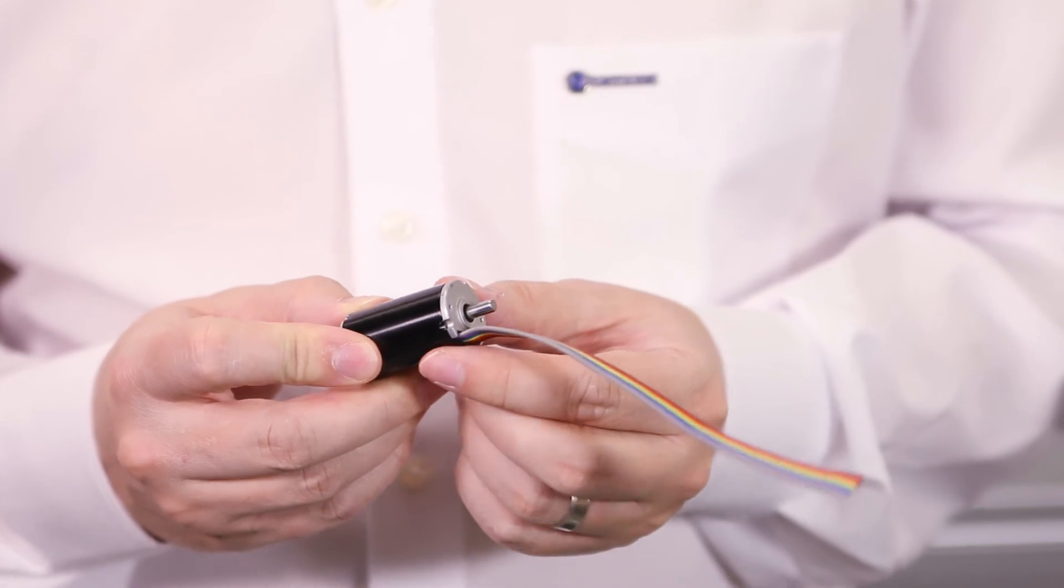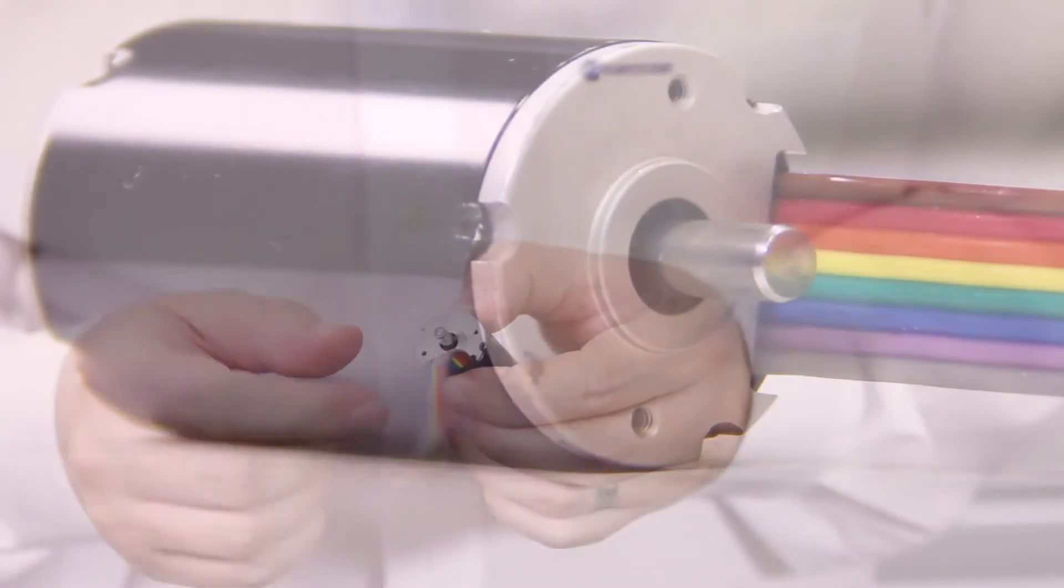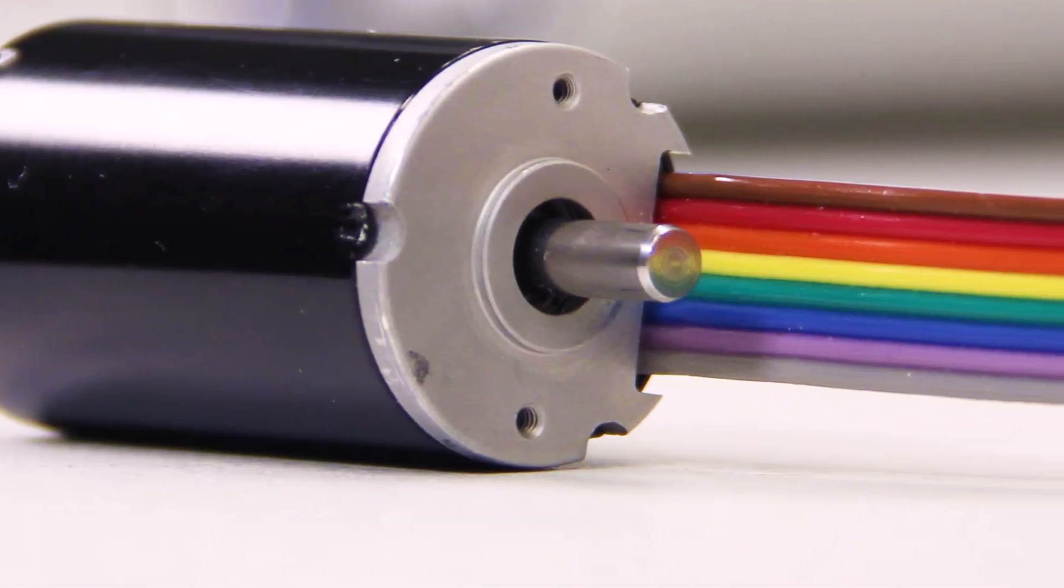The BGA22 can also be offered with an integrated commutation electronics to give simple directional control.